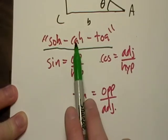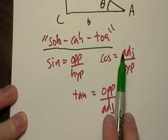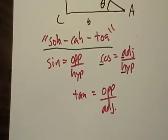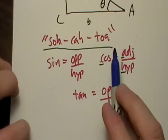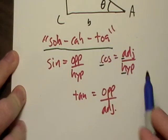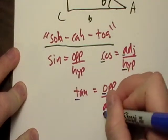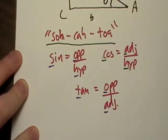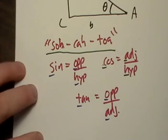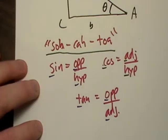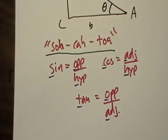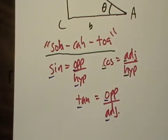This is just SOH-CAH-TOA. It's just a little mnemonic to help you remember that sine is equal to opposite over hypotenuse. Cosine is equal to adjacent over hypotenuse. Notice the C, A, and the H. And then TOA, tangent equals opposite over adjacent. And there's where the TOA comes in.